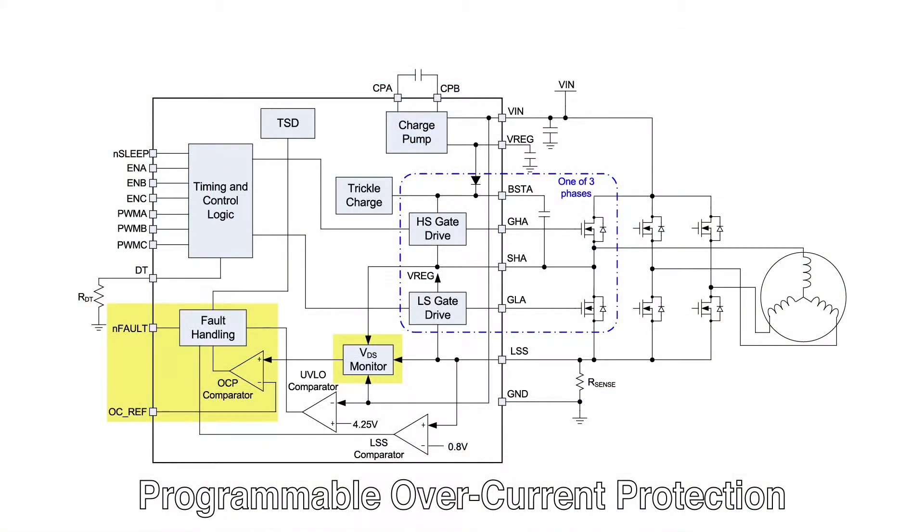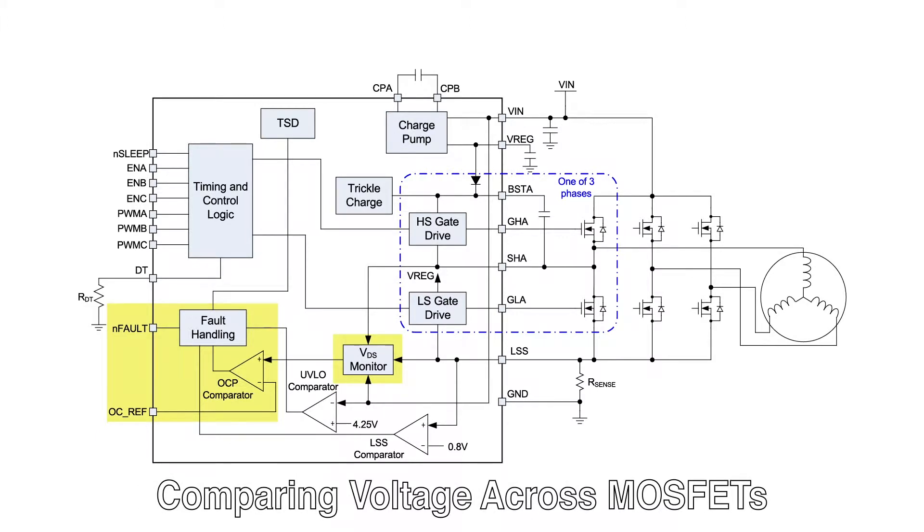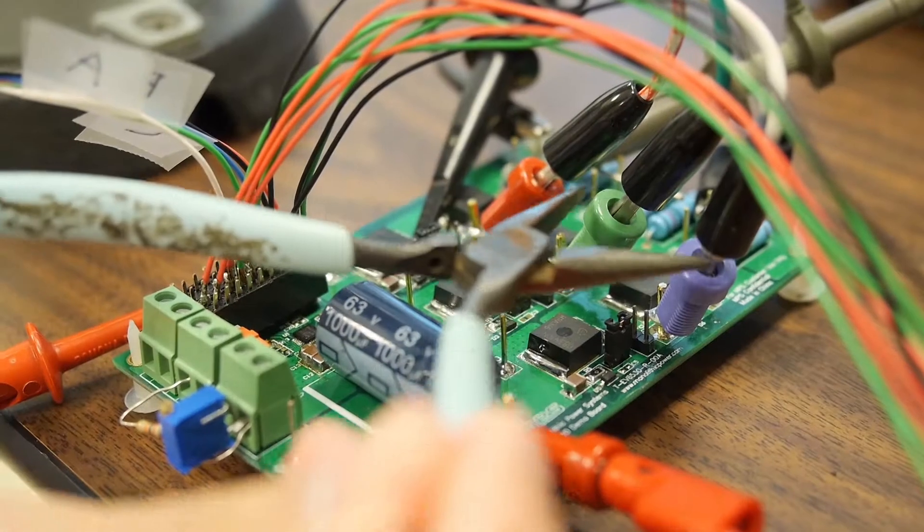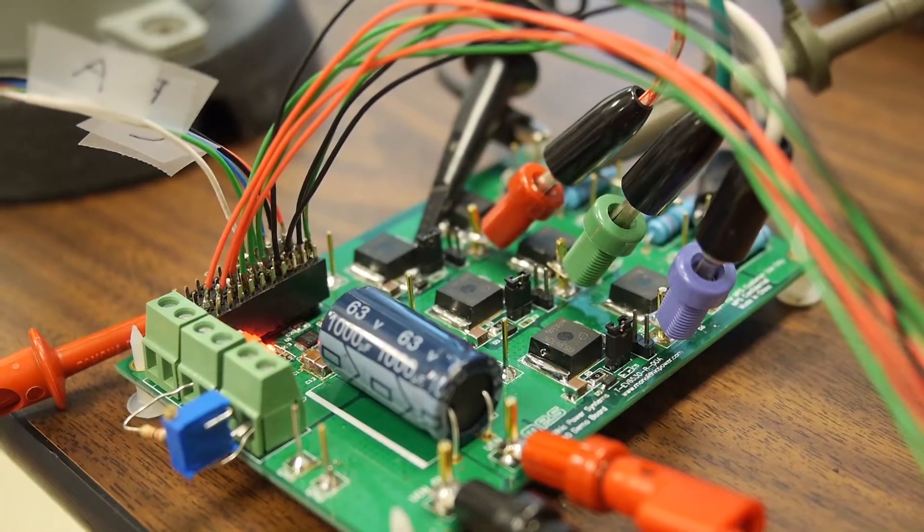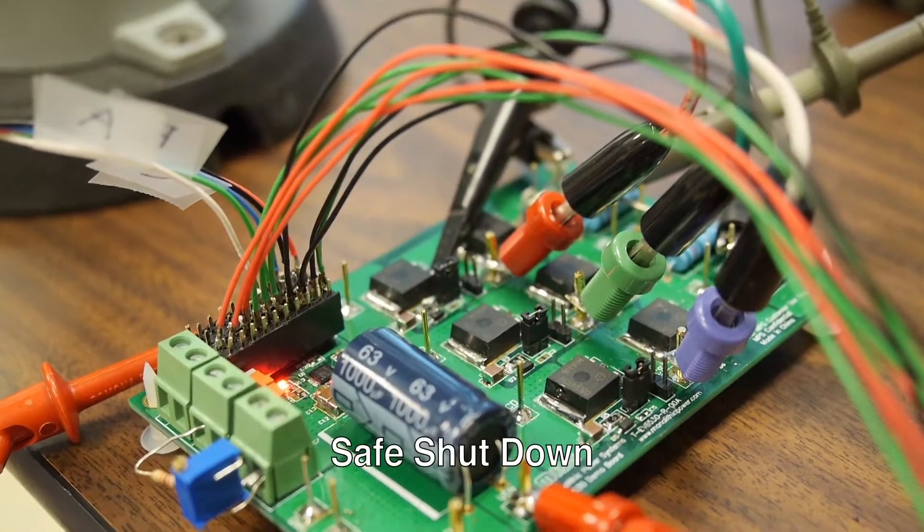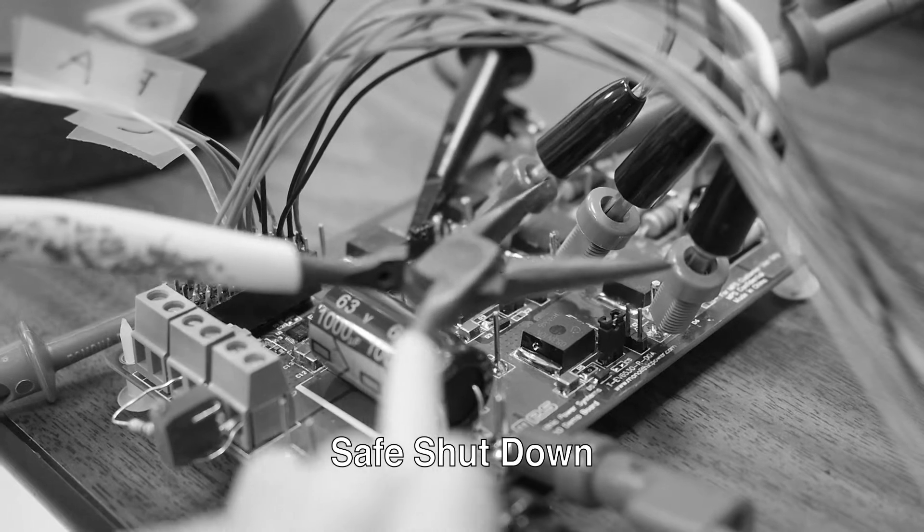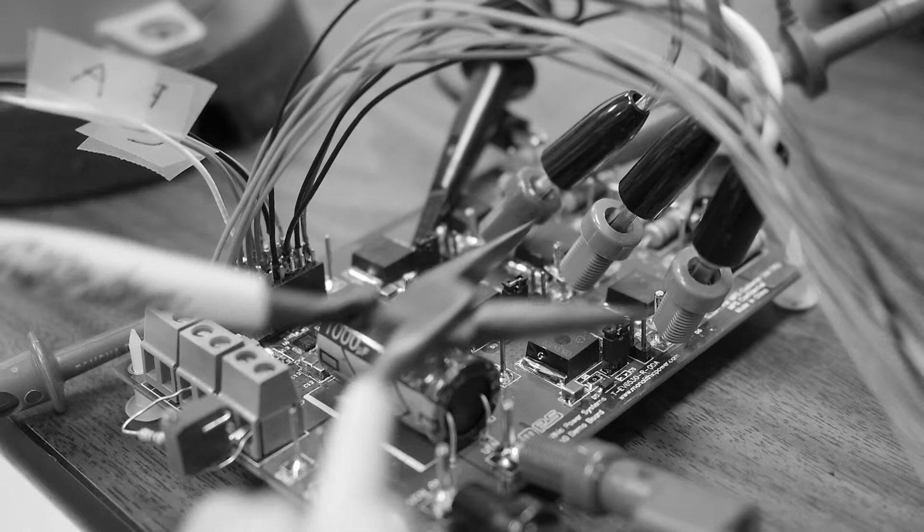Internal over current protection is included in the MP6530. The over current protection works by comparing the voltage drop across the external MOSFETs to a programmable reference voltage input. We can short out one of the outputs and the MP6530 safely shuts down. The MP6530 reacts very quickly responding after about a two to three microsecond deglitch time.